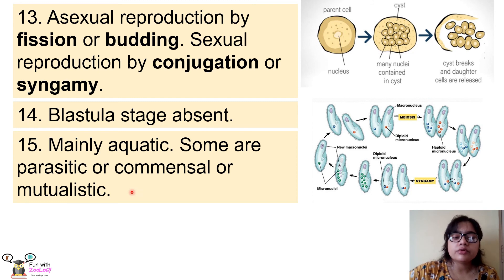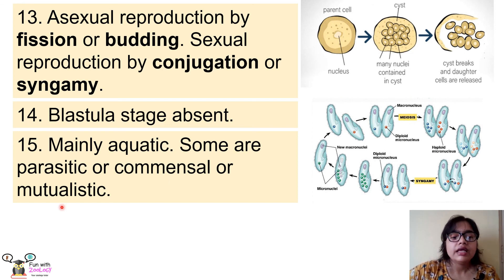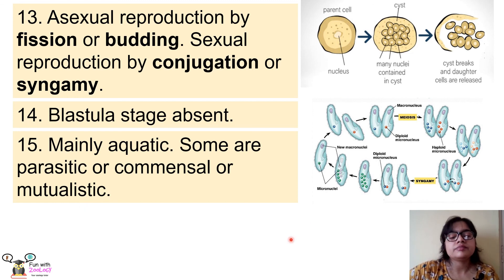The last point is that most protozoans are aquatic — they live in water. They can be parasitic, commensal, or mutualistic. Parasitic means the protozoans live in the body of a host, derive nutrition, and benefit while the host is deprived of nutrition. In commensalism, the protozoans live with another organism without harming it. In mutualism, both the protozoan and the other organism are benefited. This concludes all the general characteristics of protozoans.